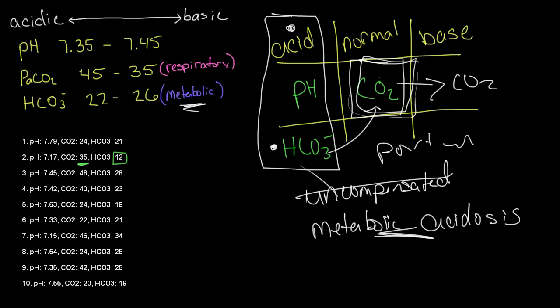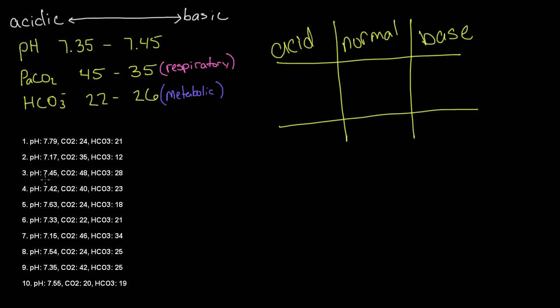Let's go to problem number three. The pH is 7.45 — this is normal, so pH goes in the normal column. Our CO2 is 48, which is outside of this range — it's more acidic, so we write down our CO2 in the acid column. And our bicarbonate is 28, which is also abnormal — it is basic, so we write down our HCO3 in the basic column.